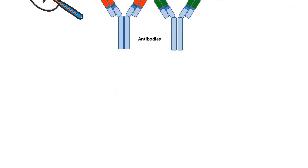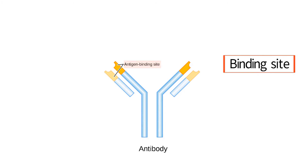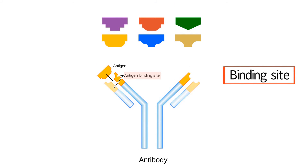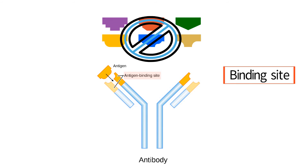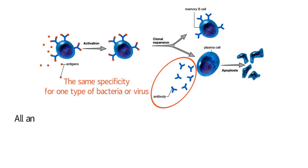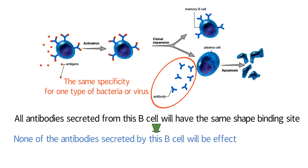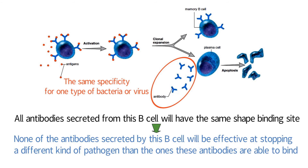This is due to the specificity of the antibody binding site. The portion of the antibody that binds to a bacterial cell or a virus is known as the binding site. The binding site on an antibody has a specific shape, which determines what an antibody is able to bind to. If an antibody comes across a bacterial cell or virus and the shape of the binding site is not a good fit, the antibody is not able to bind and will simply continue to pass through the fluids of the body. One B cell can secrete one type of antibody, meaning the antibodies will all have the same shape to their binding sites, resulting in the same specificity for one type of bacteria or virus. Since all antibodies secreted from this B cell will have the same shape binding site, none of them will be effective at stopping a different kind of pathogen.